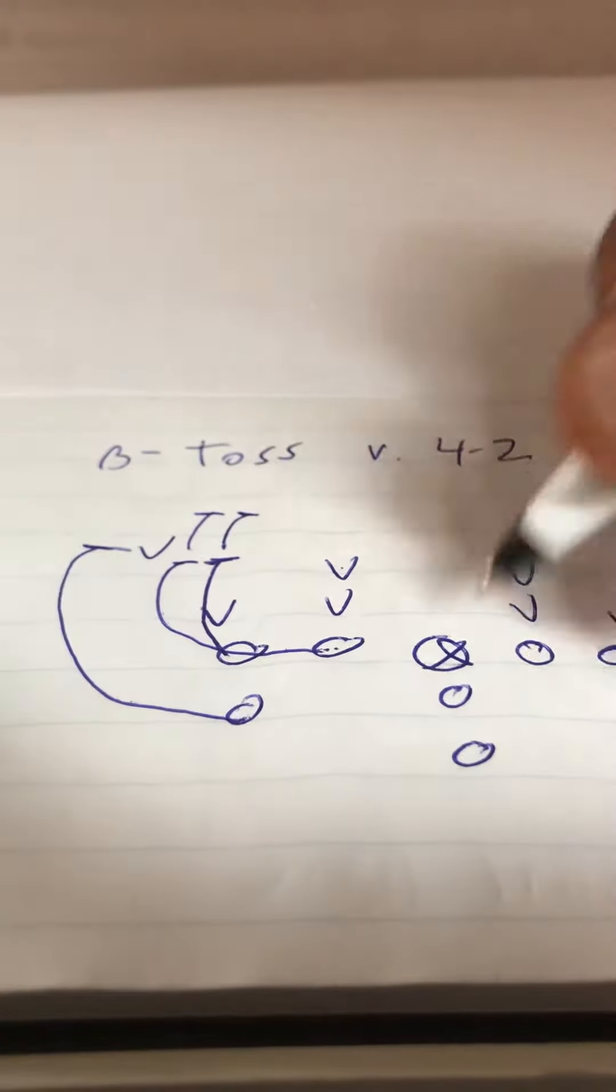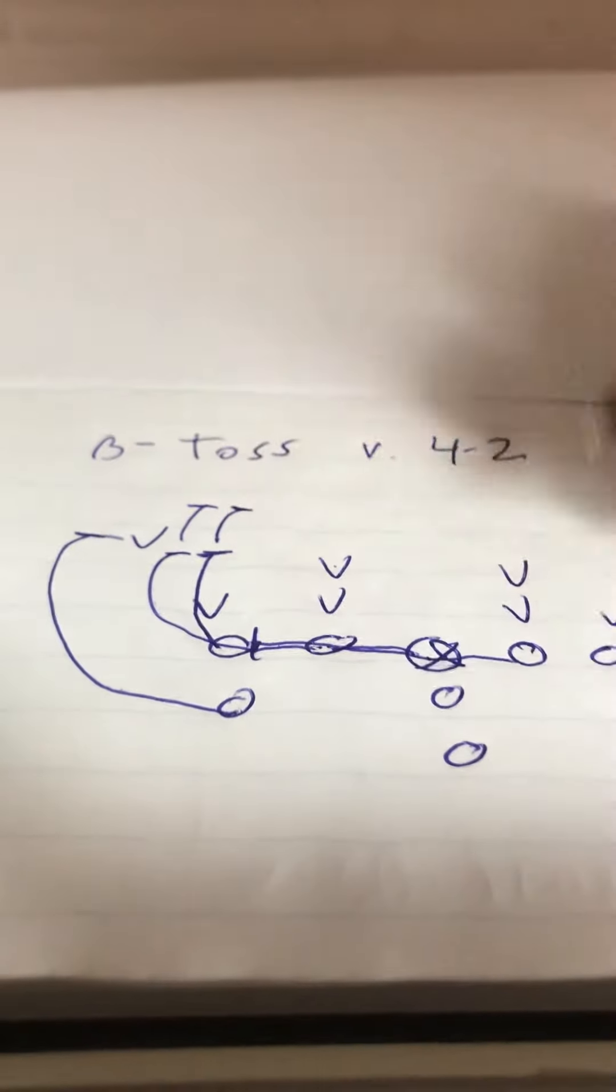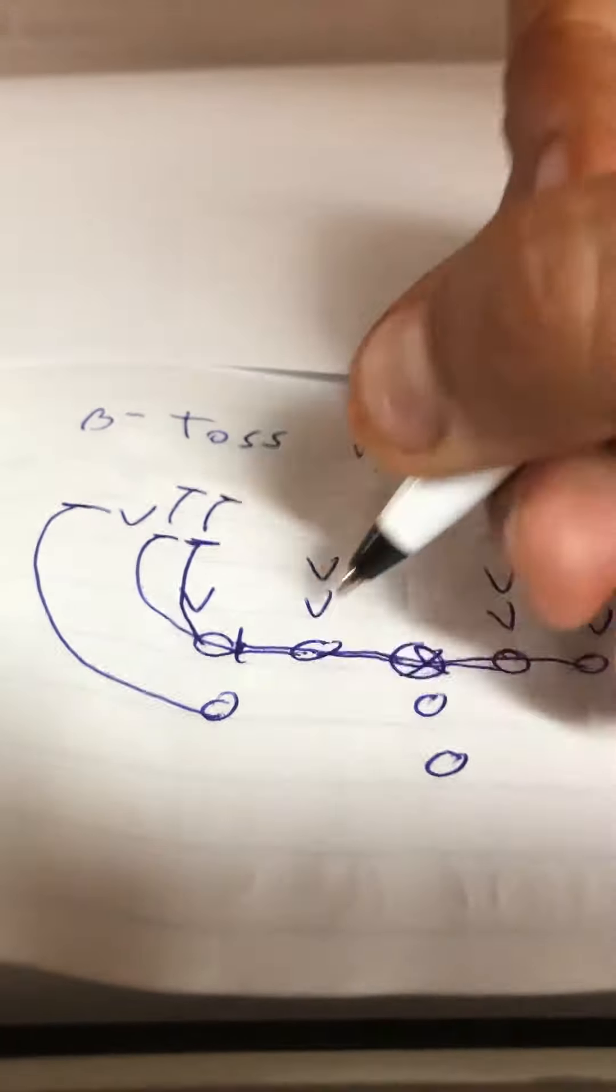The center and the backside are all going to scoop. The center is going to open flat, run to the hip of the guard. Guard runs to the hip of the center. Backside end runs to the hip of the backside guard.